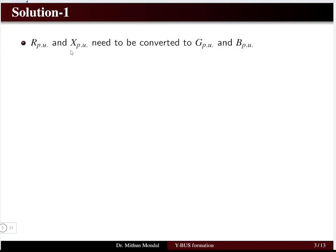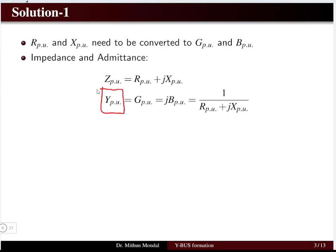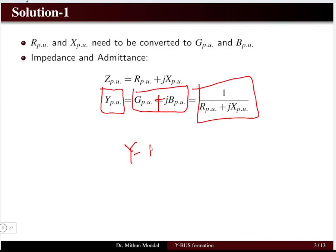The resistance and reactance given in per unit need to be converted to conductance G and susceptance B. From circuit concepts, impedance is R + jX, whereas admittance is the reciprocal: 1/(R_pu + jX_pu), which can be written as G + jB in per unit. We will convert impedance into admittance because we need to calculate the Y bus of the system.